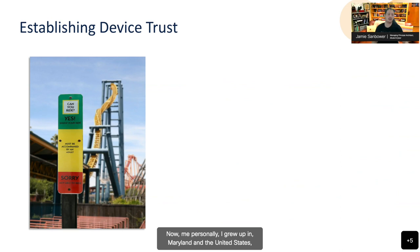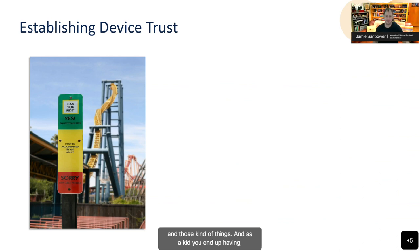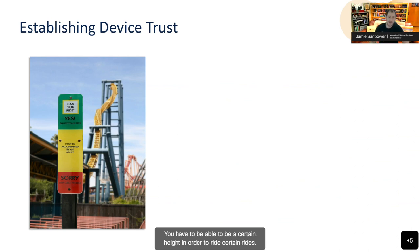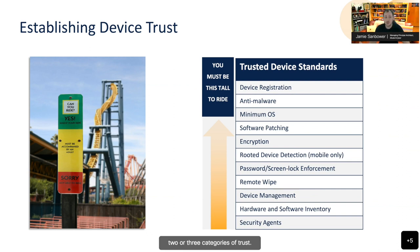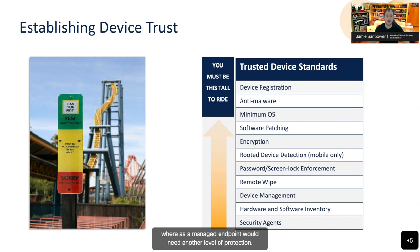Personally, I grew up in Maryland in the United States, always going to amusement parks and county fairs. As a kid, if you got that wristband, you could ride anything — but that's not completely true. You have to be a certain height to ride certain rides. I find this to be a great analogy for establishing device trust. How will your organization define trust? The best practice is to define two or three categories of trust. A BYOD device might need a certain level of protection, whereas a managed endpoint would need another level. You can also build in some behavior-based information.